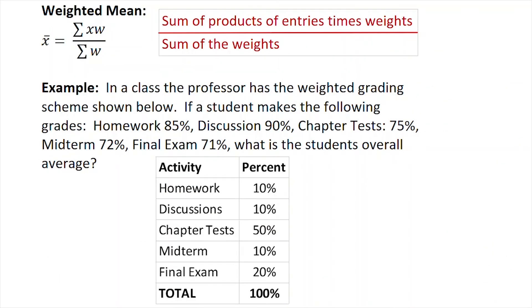The next thing we'll think about is the weighted mean or the weighted average. We have a formula for that. X bar, the weighted mean, is the sum of all the products of the entries times the weight divided by the sum of the weights.